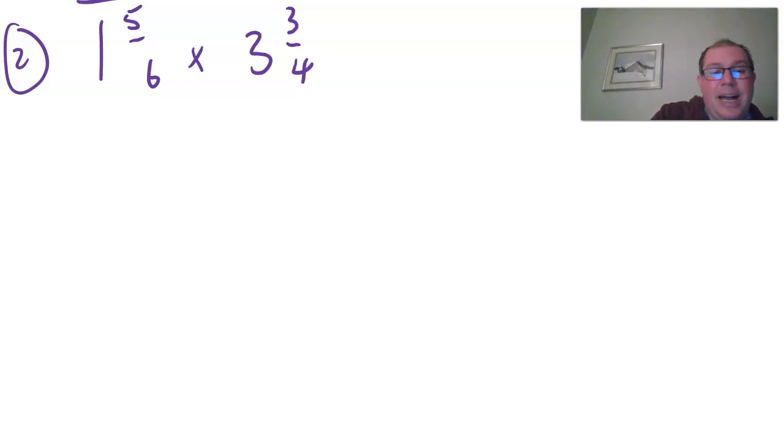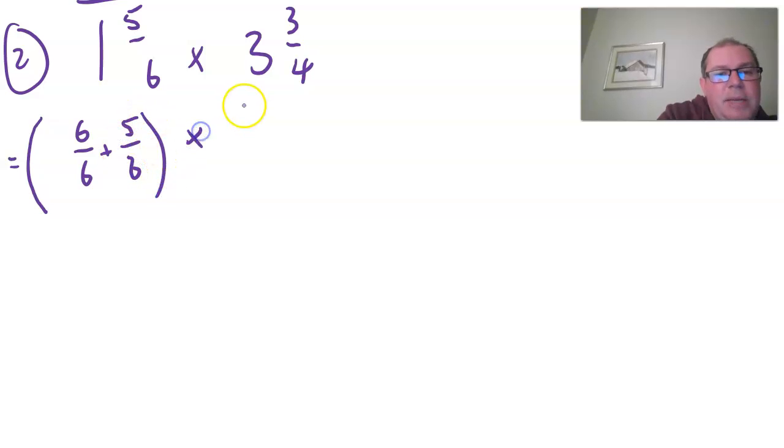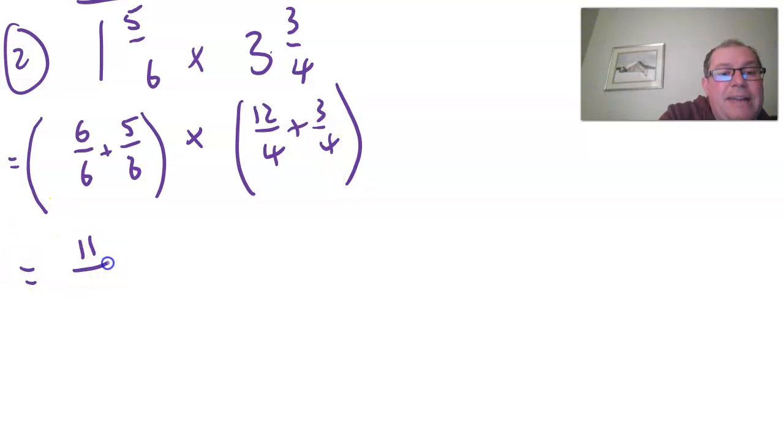Okay so I'm going to go through number two. I've got to show this middle step here which some of you may choose not to show. So one written as sixths is six sixths add five sixths, times, and three written as quarters is clearly twelve over four. Twelve over four is three plus three quarters. So most of you I'm sure will jump to this line. You've got eleven sixths times fifteen quarters.